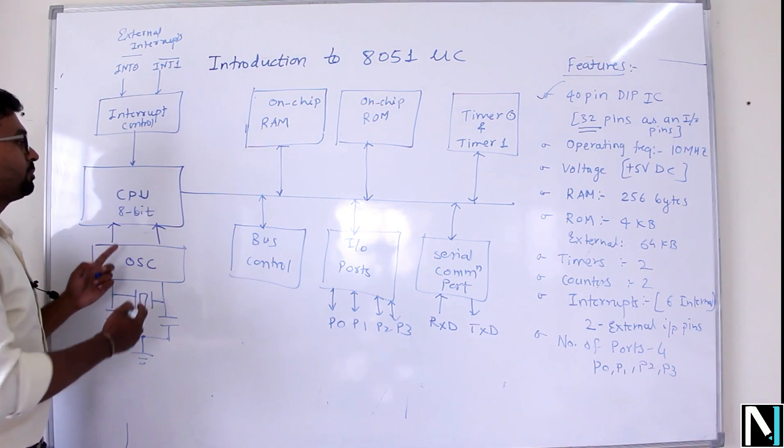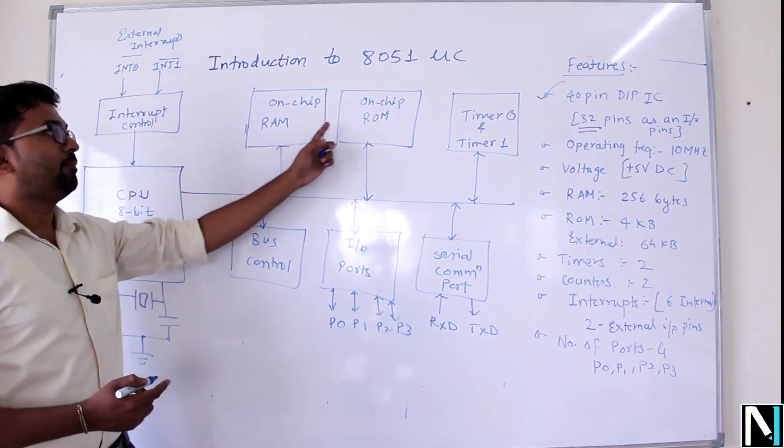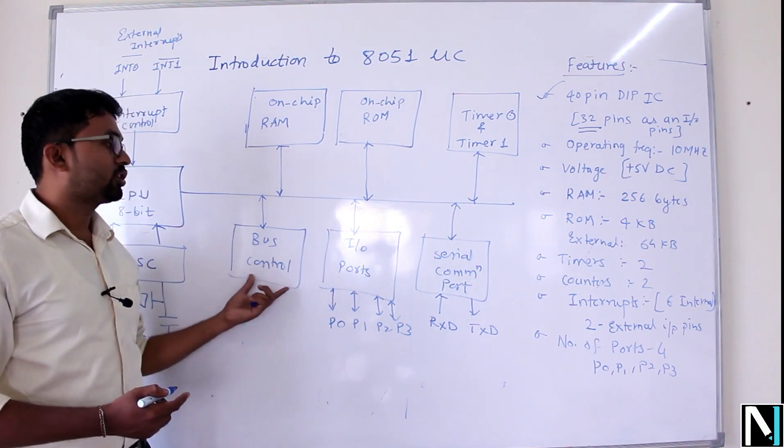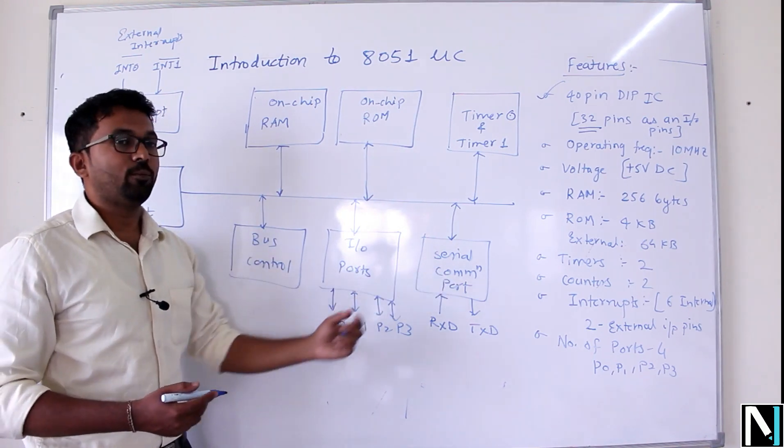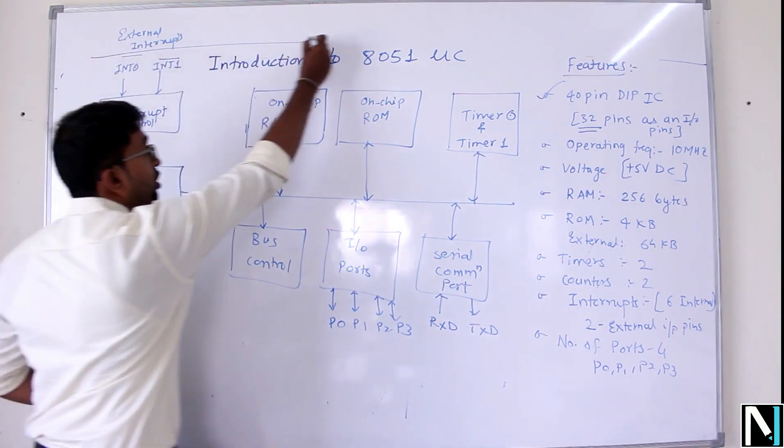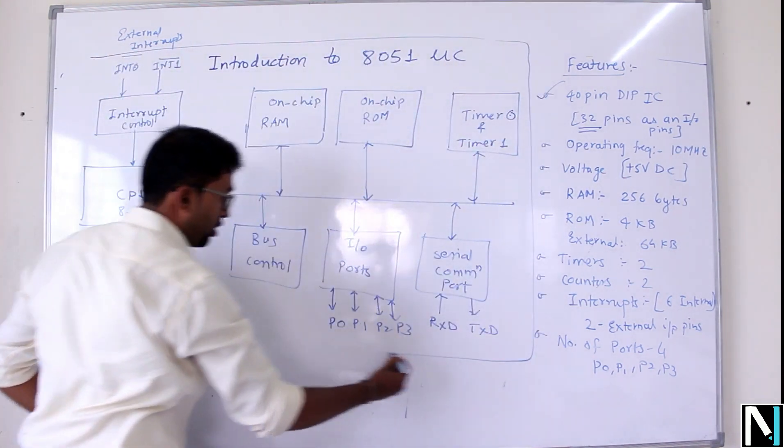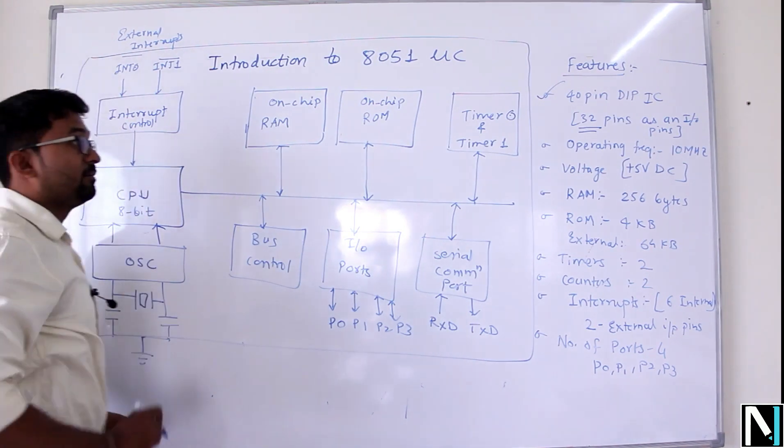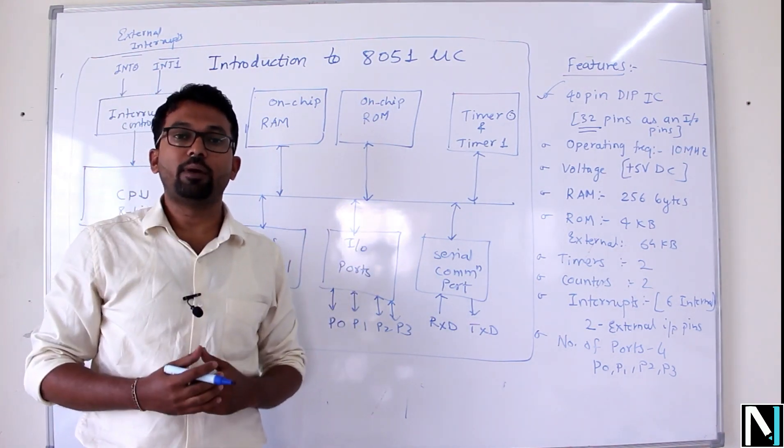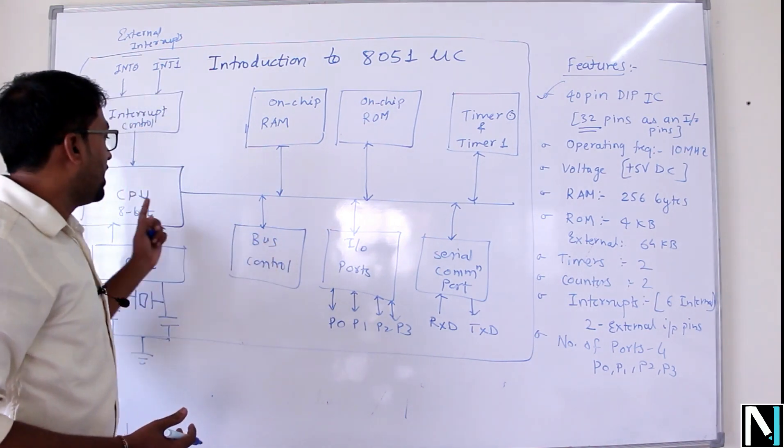All these blocks such as CPU, on-chip RAM, on-chip ROM, timer 0, timer 1, bus control, input-output ports, serial communication - all these are present on a single chip. All these things are inbuilt within the microcontroller.